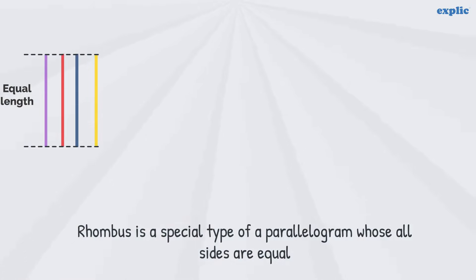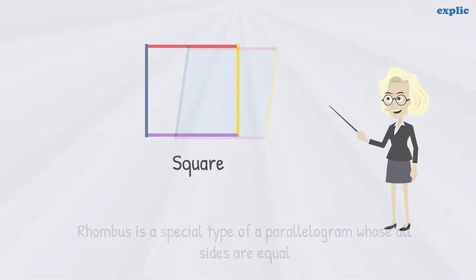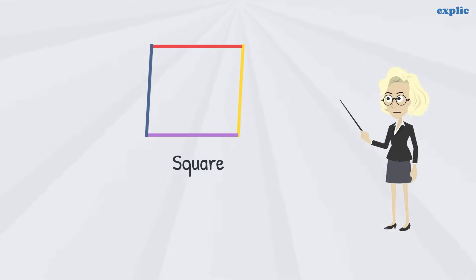Rhombus is a special type of parallelogram whose all sides are equal. The difference between square and rhombus is the angle, same as a rectangle and a parallelogram.